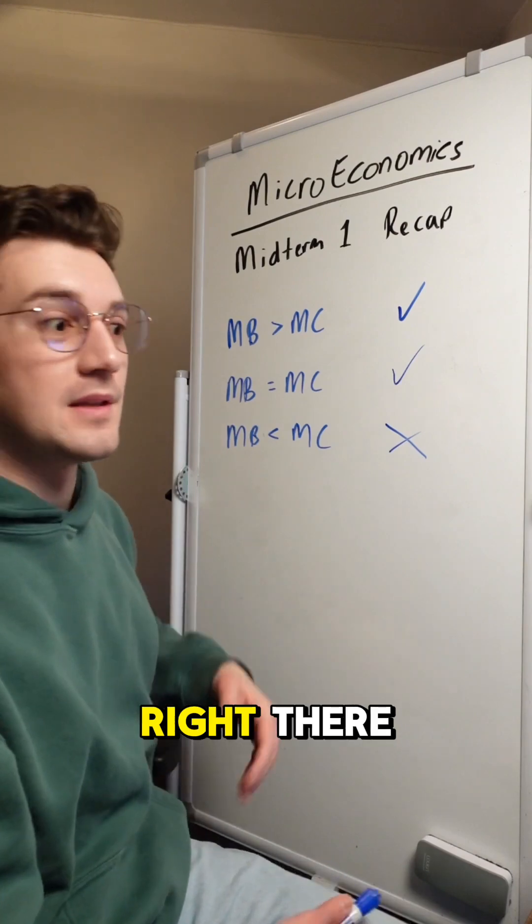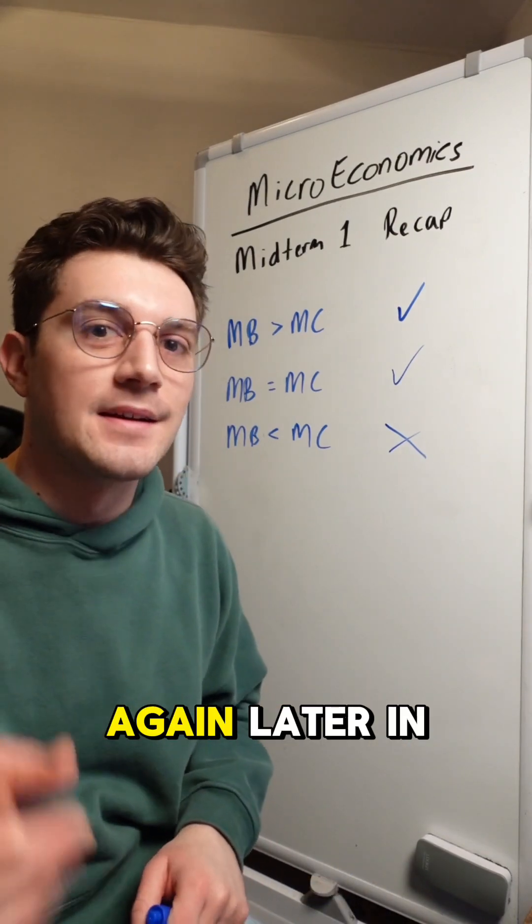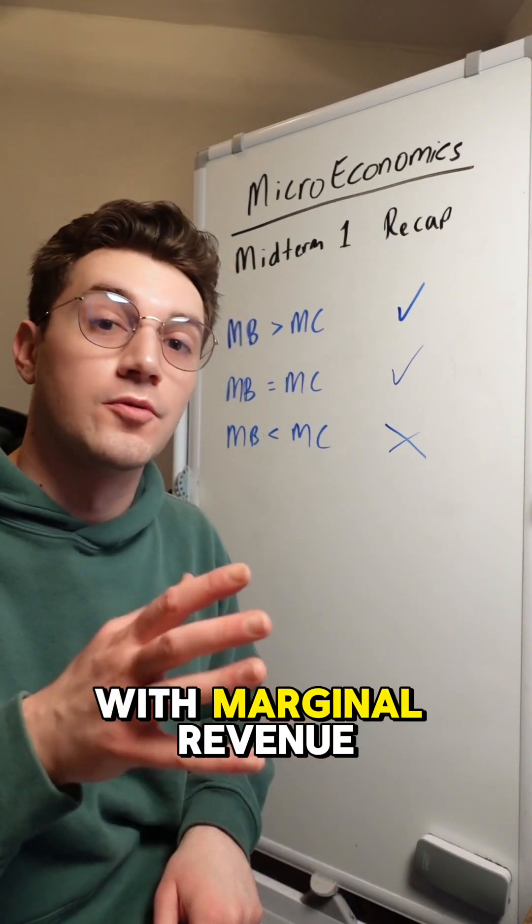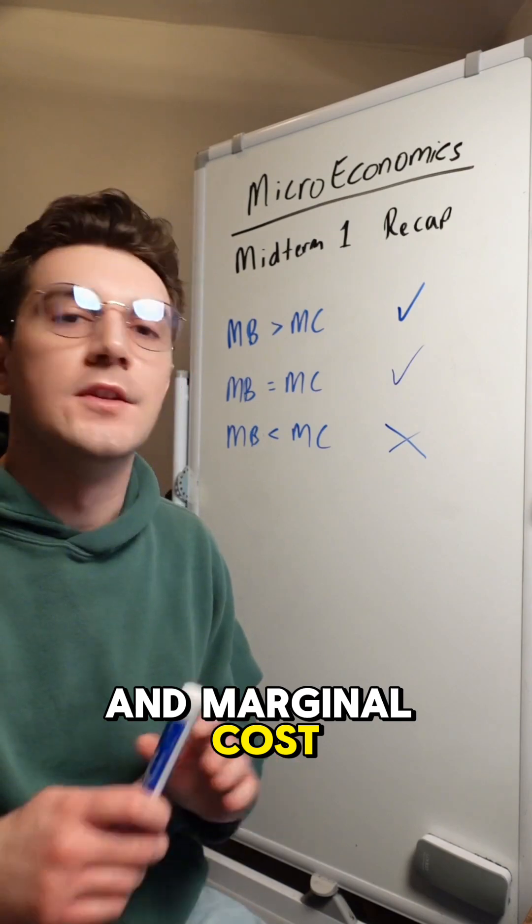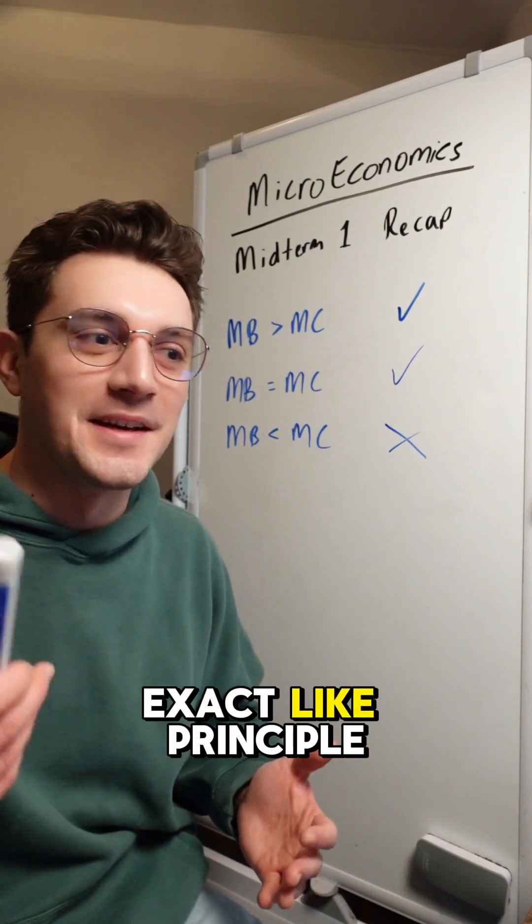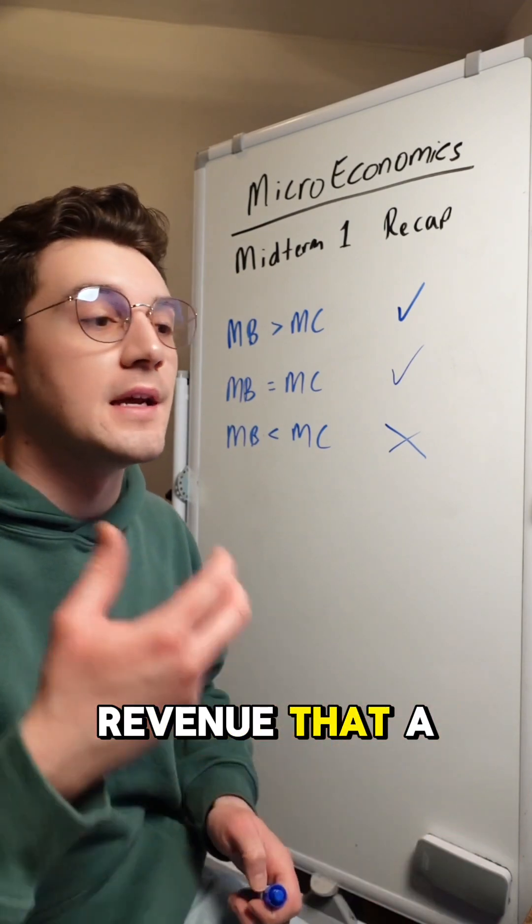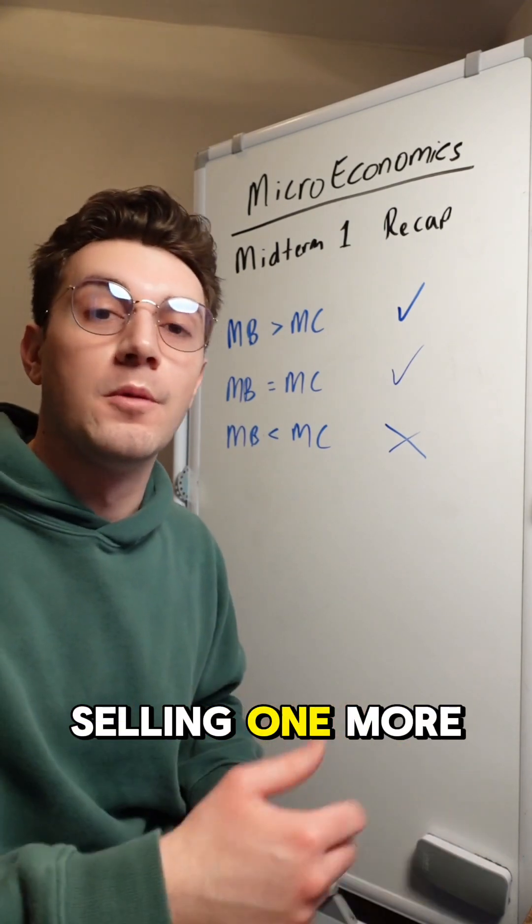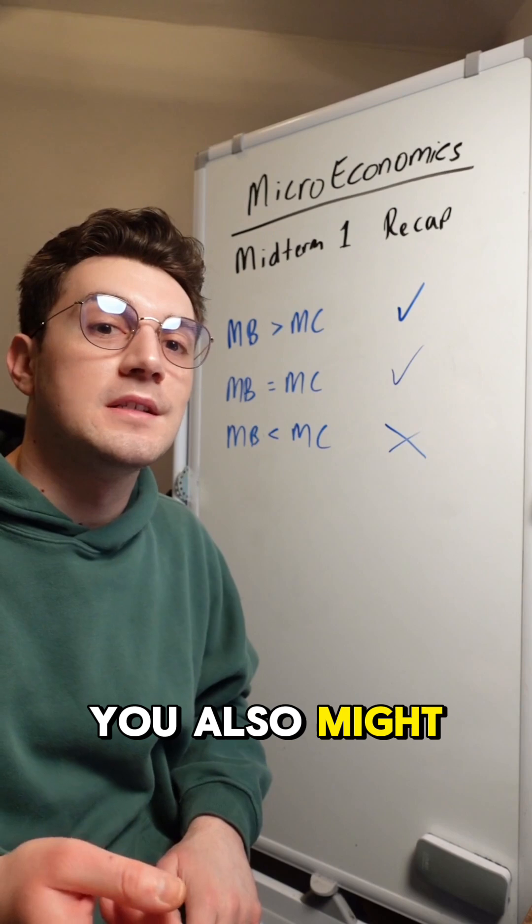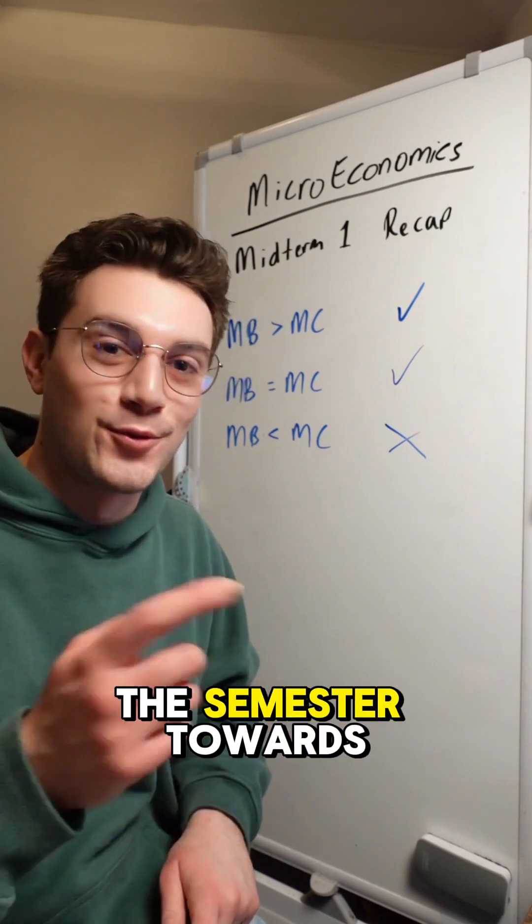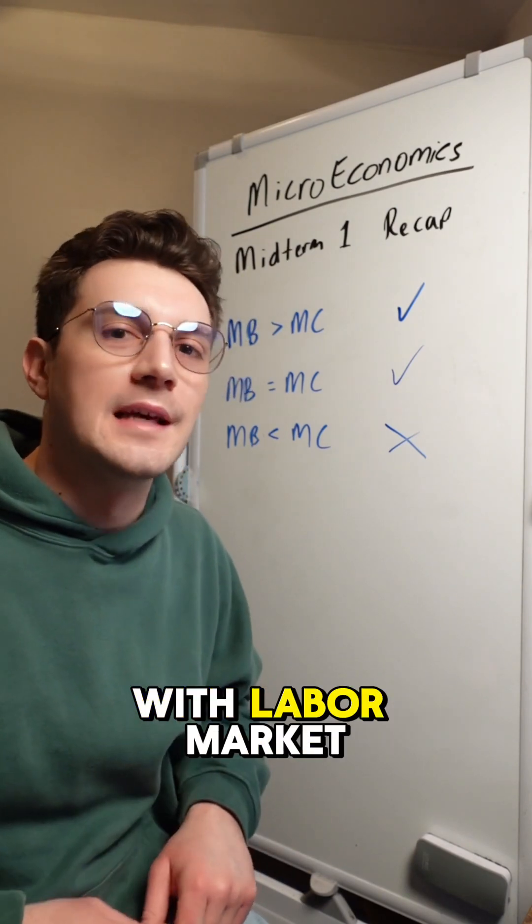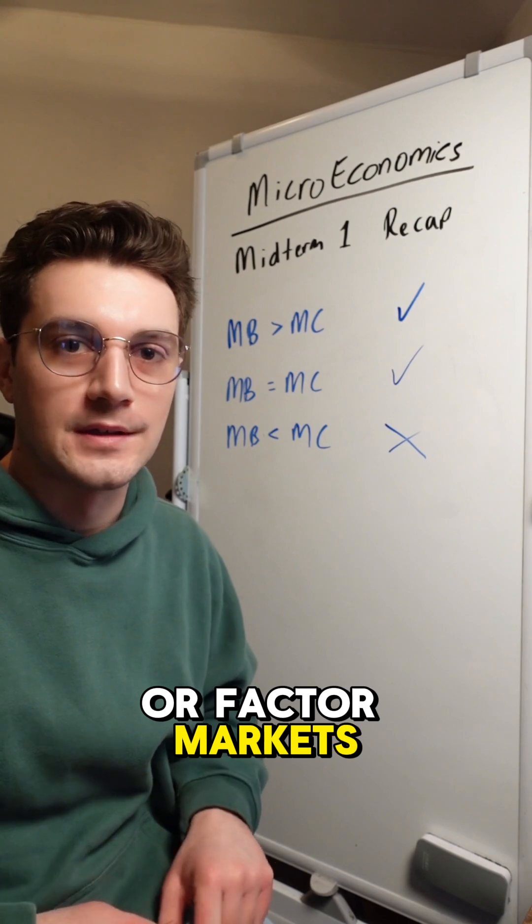That whole process will be reflected again later in the semester with marginal revenue and marginal cost. It's quite literally the same exact principle, same exact concept. It's just now we're working with additional revenue that a firm can generate by selling one more unit to the market. You also might see this again even later in the semester towards finals if you're working with labor markets or factor markets.